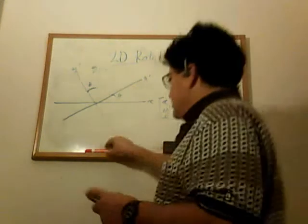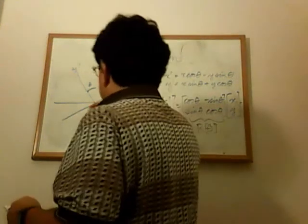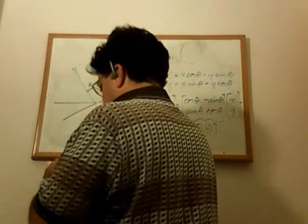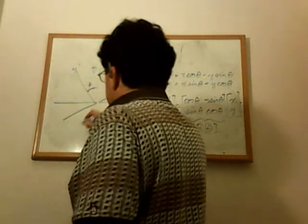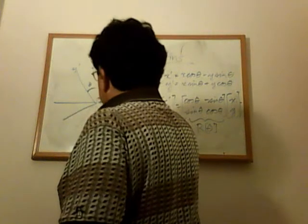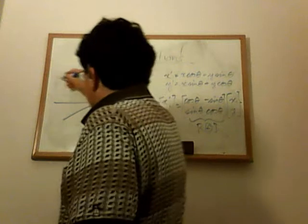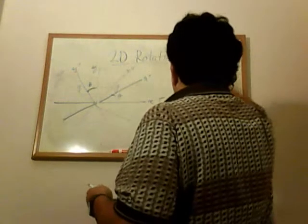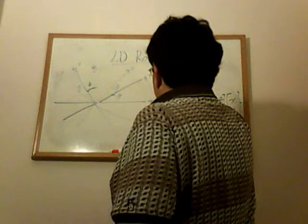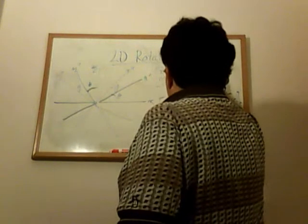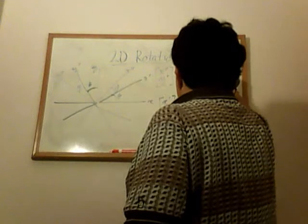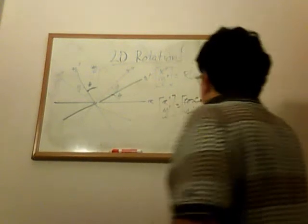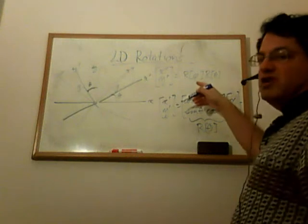These have a number of nice properties. One nice property is that if you take two of these rotations — imagine we rotate again by an angle phi — so we're doing this twice, going to new axes x double prime and y double prime. If we do two of these rotations together, we have x double prime, y double prime equals R of theta followed by R of phi.